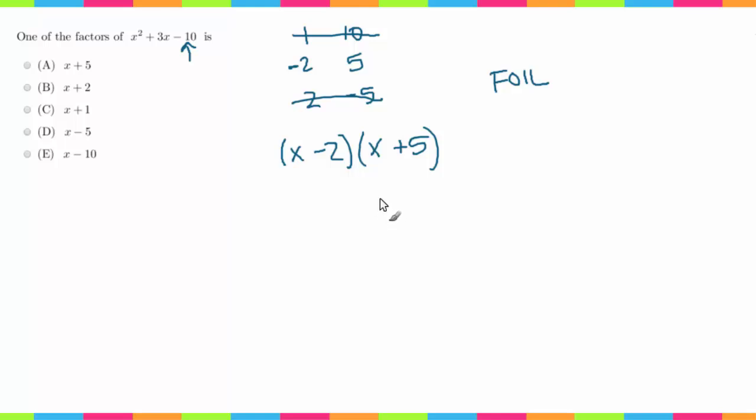Now we have to look at the answer choices and figure out which one matches one of our factors. Immediately we see that we have x plus 5 as a factor right here, so that makes our answer choice letter A.